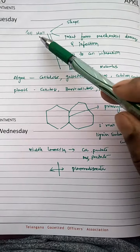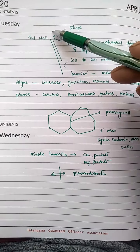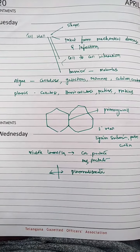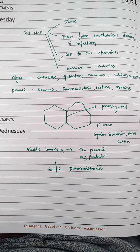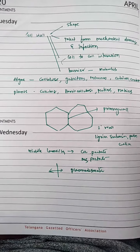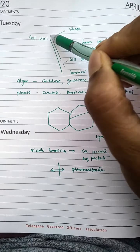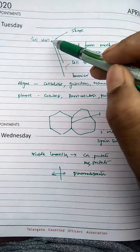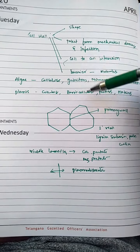The cell wall is present only in plant cells. Animals lack the cell wall and have only the cell membrane. The cell wall is the outermost layer of the cell, and its main functions can be differentiated into different types.